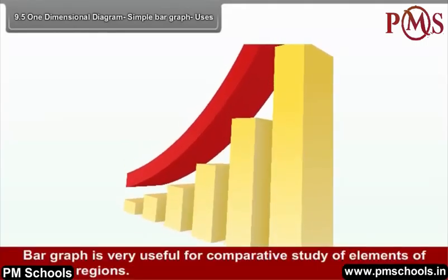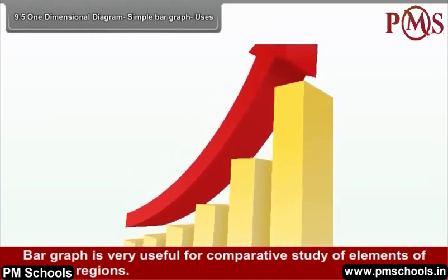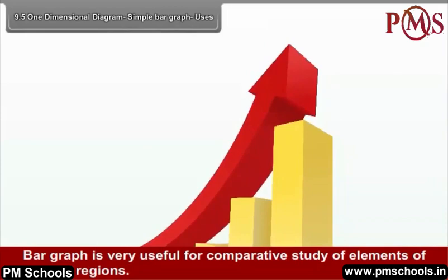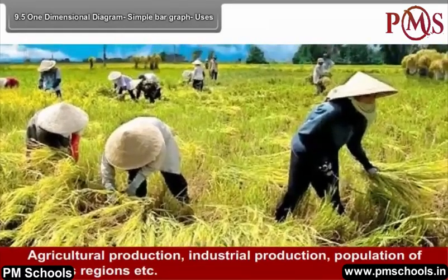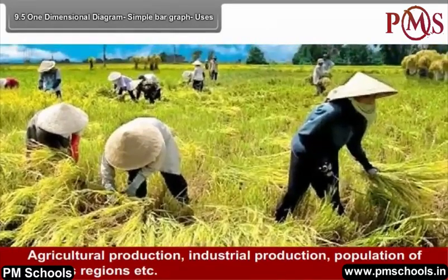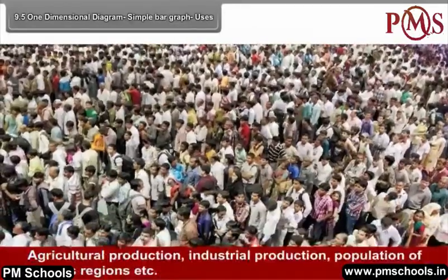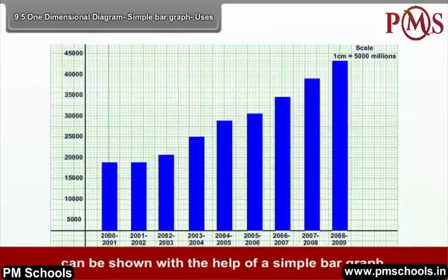Uses of Bar Graph: A bar graph is very useful for comparative study of elements of various regions. Agricultural production, industrial production, population of various regions, etc. can be shown with the help of a simple bar graph.